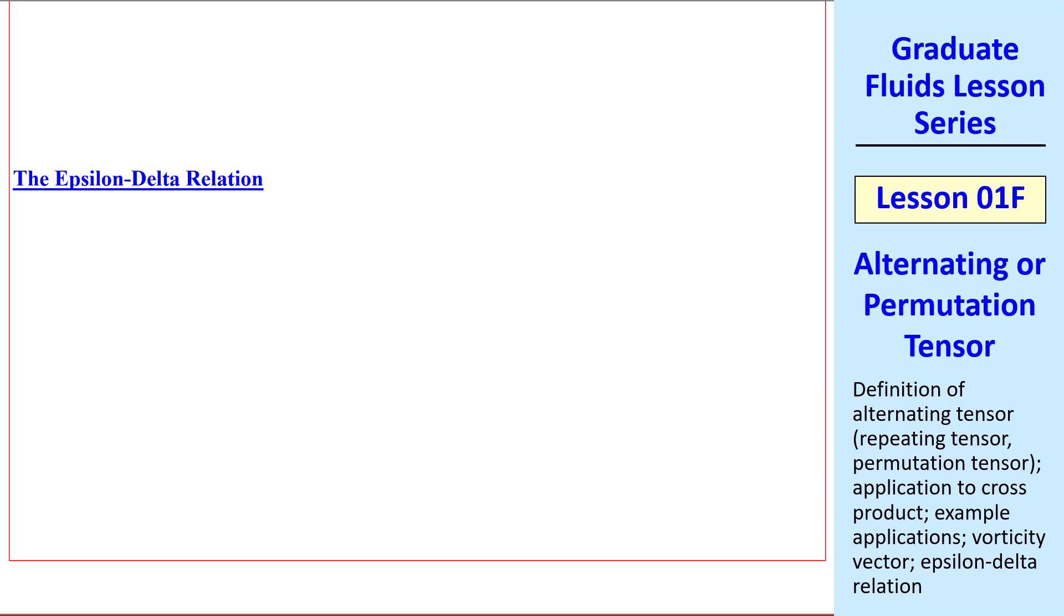Finally, there's a cool relationship called the epsilon-delta relation. I won't prove it, but I'll write it out. When you have epsilon_ijk times epsilon_klm, where notice that these two indices are the same, but these two differ from these two, this turns out to equal delta_il delta_jm minus delta_im delta_jl. This is the epsilon-delta relation, which will pop up in some of our equations later on and will be very useful to us.